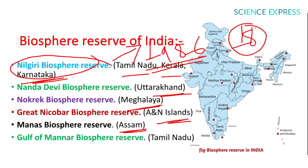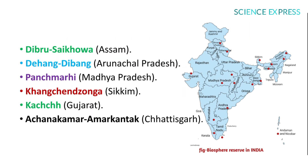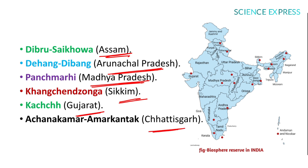Additional biosphere reserves: Dibru-Saikhowa in Assam, Dihang-Dibang in Arunachal Pradesh, Pachmarhi in Madhya Pradesh, Khangchendzonga in Sikkim, Kachchh in Gujarat, and Achanakmar-Amarkantak in Chhattisgarh.